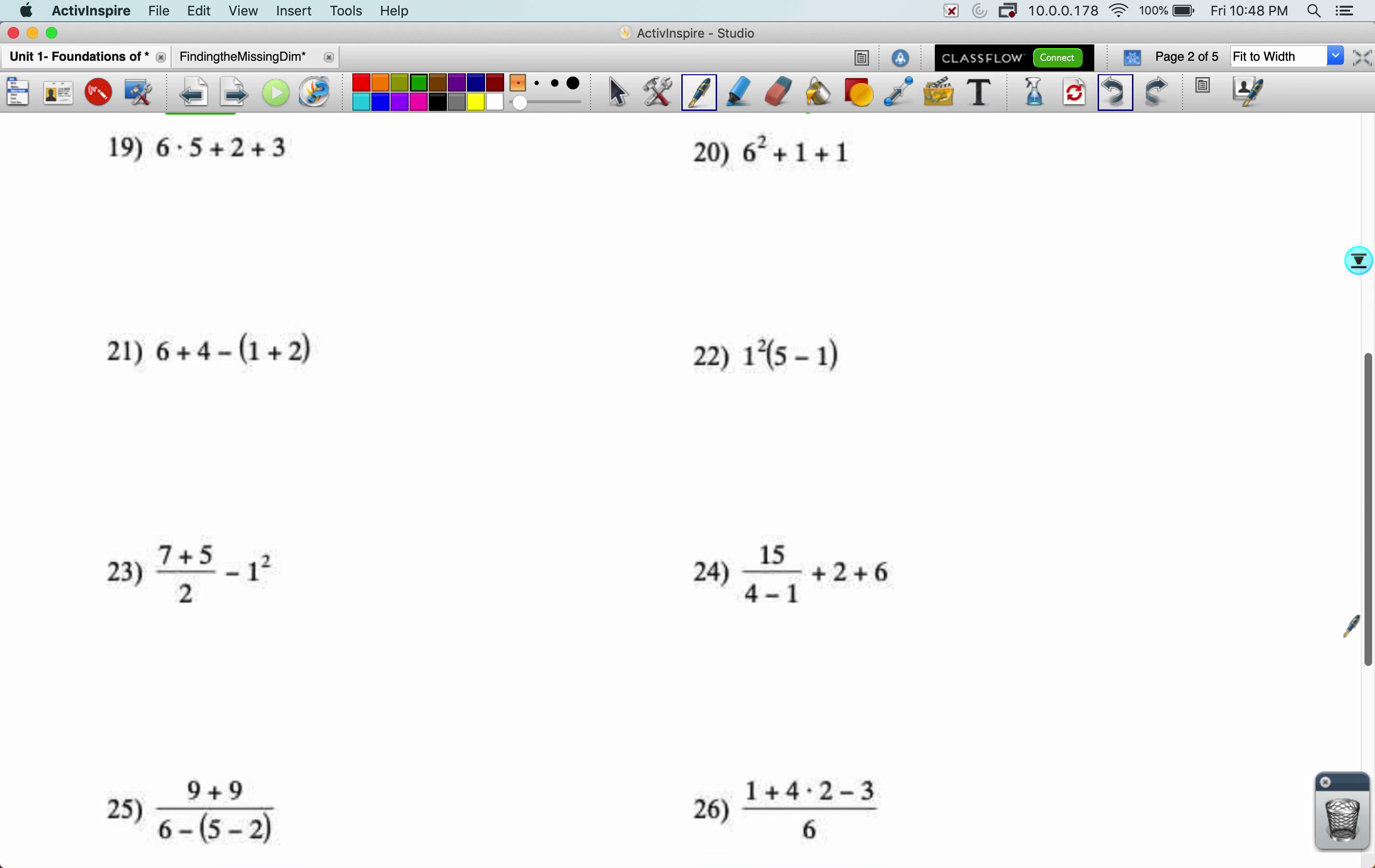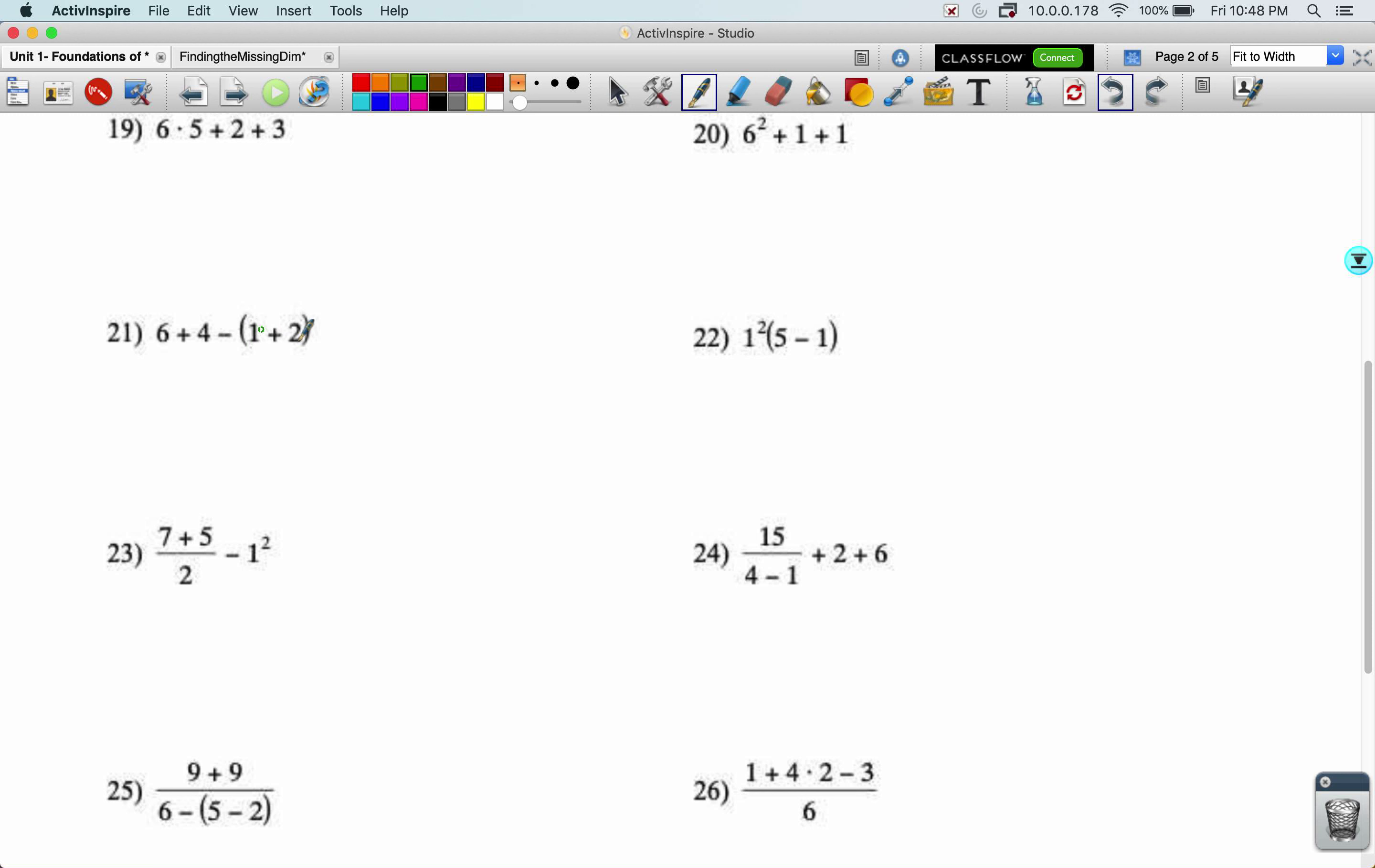Let's look at maybe 21. Got to do the parentheses first, but I can also combine the six plus four because it has nothing to do with these parentheses. There'll be six plus four, 10 minus one plus two is a three. So 10 minus three becomes a seven.